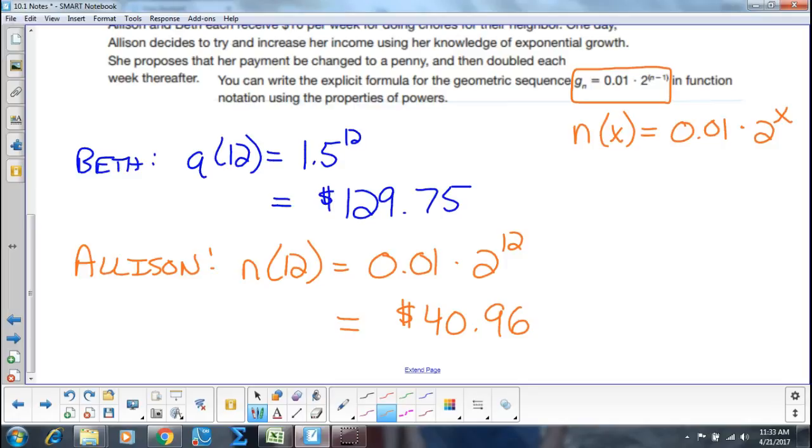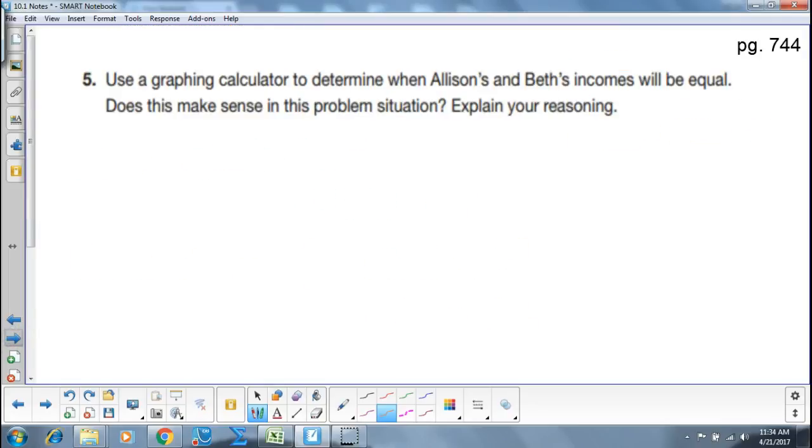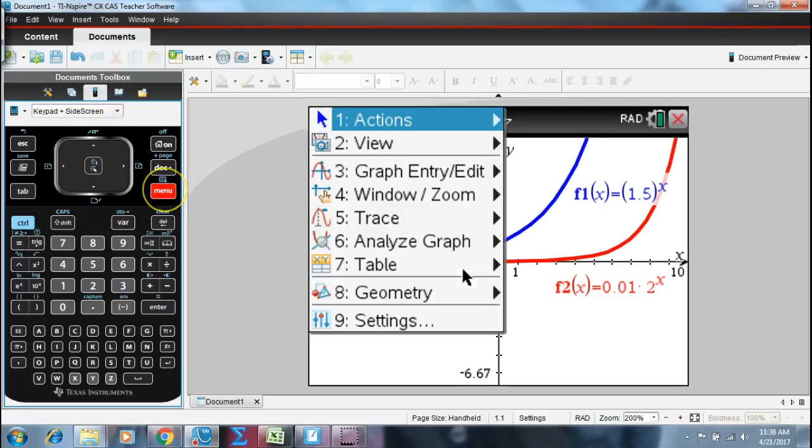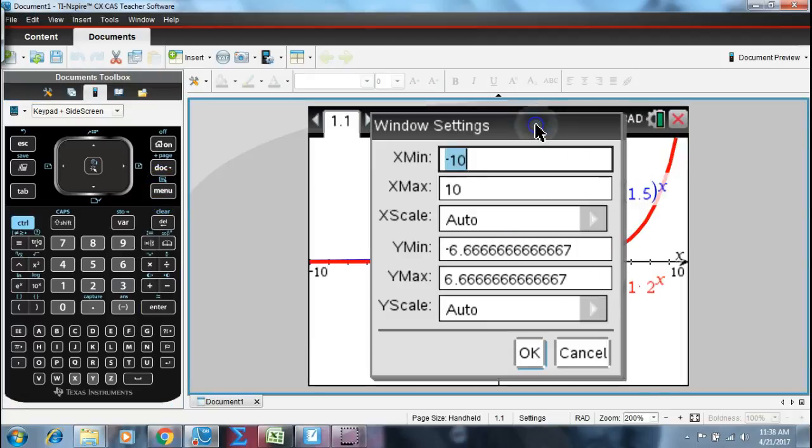What I would like you to do now is, I would like you to now investigate Beth using Quentin's plan and Allison using her plan, using your graphing calculator. I'd like you to tell me in what week would they make the same amount of money. It's question number five. Can't see where they actually intersect, right? So what do we have to do? We got to adjust the window settings. So let's talk about the window settings here now.